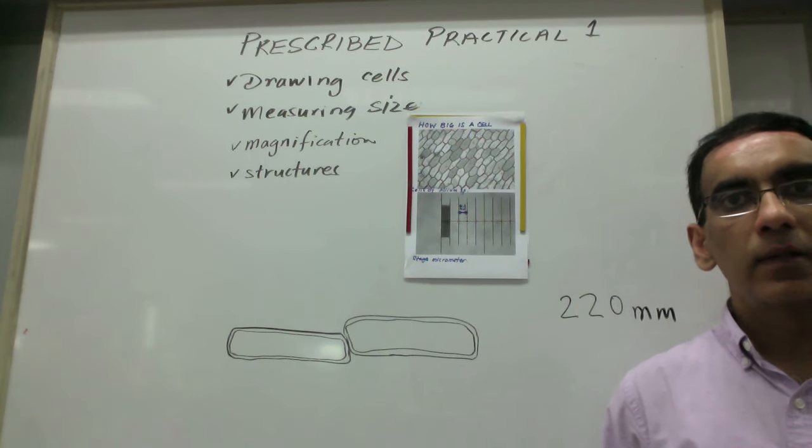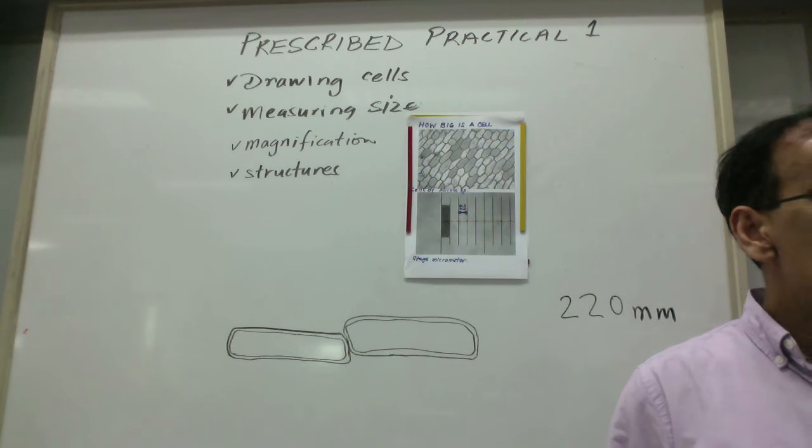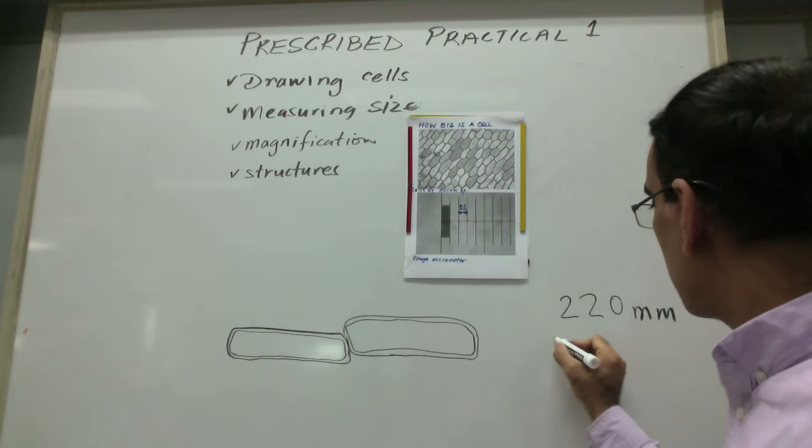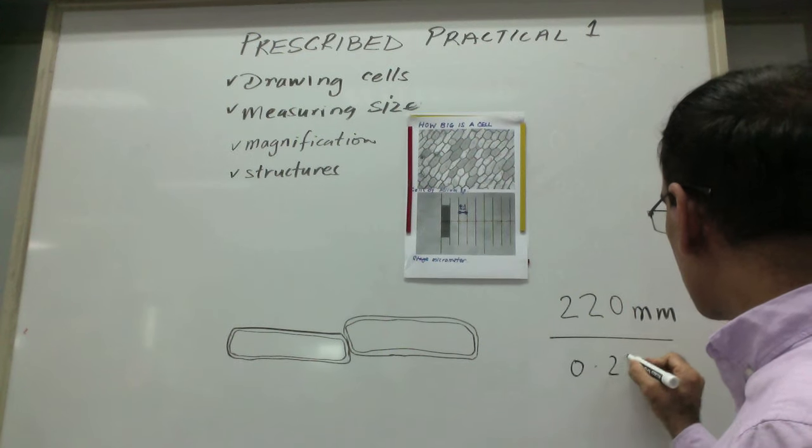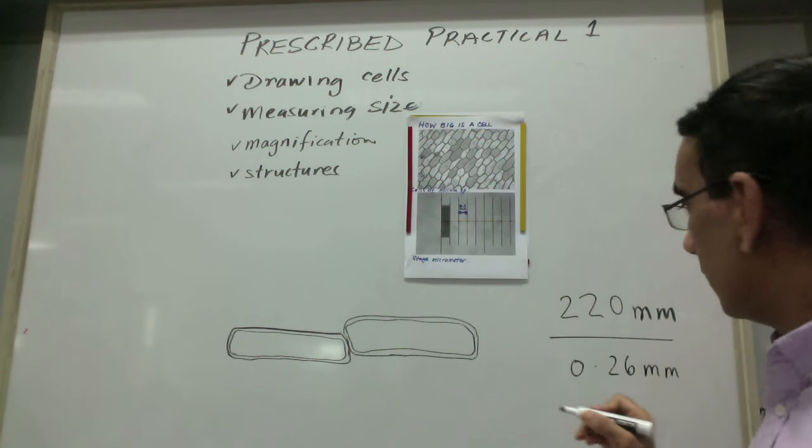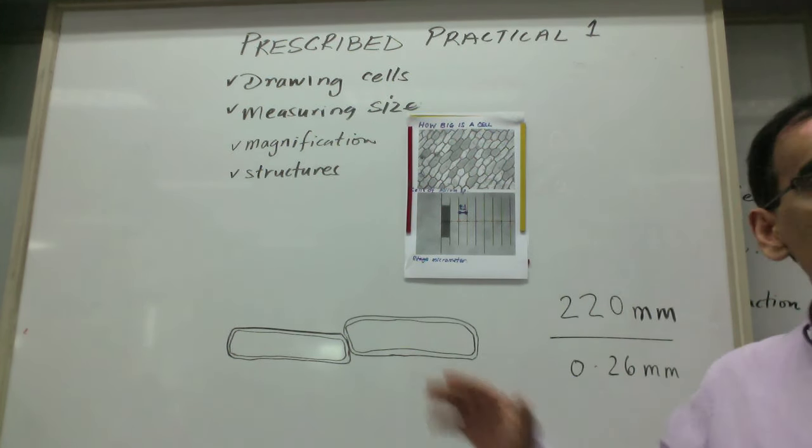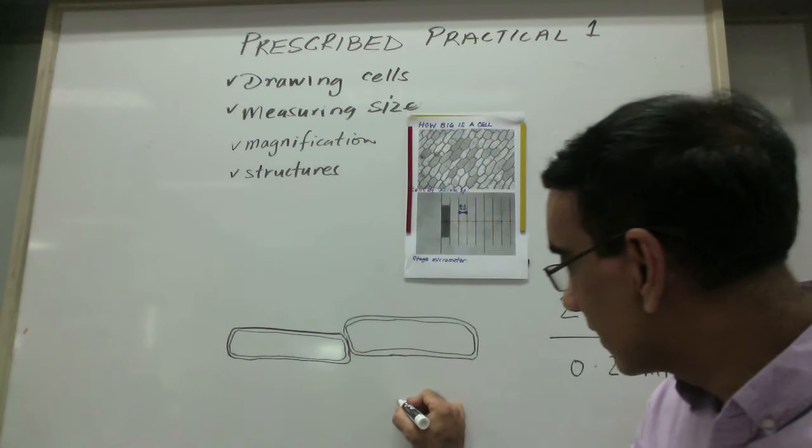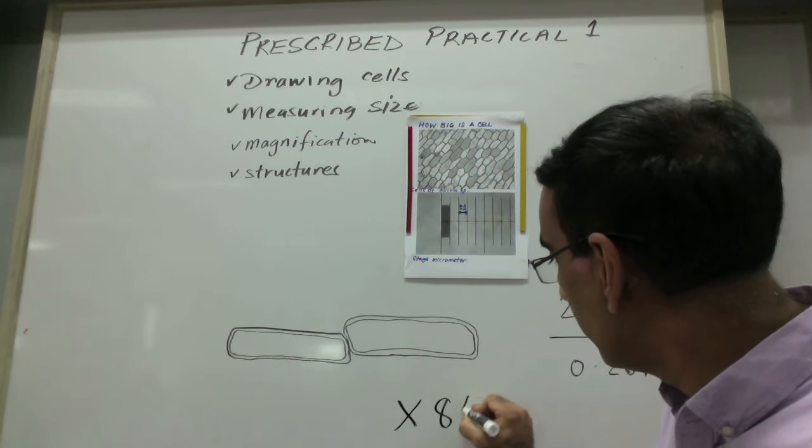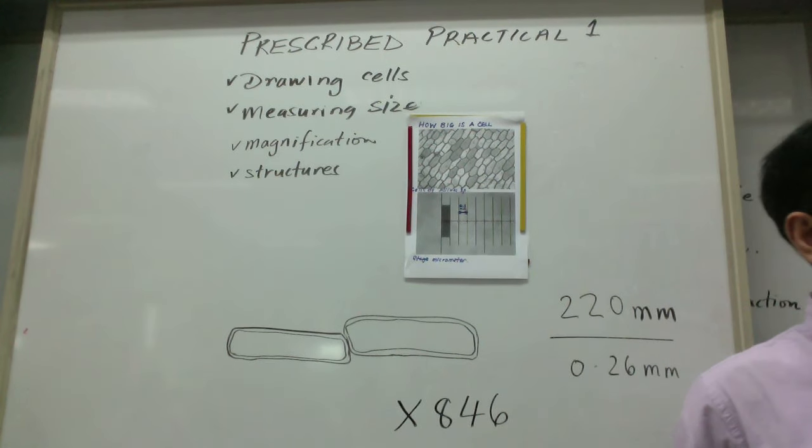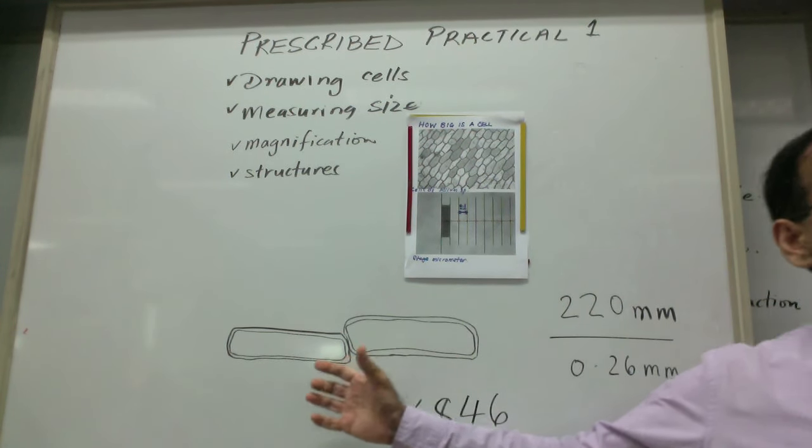Somebody would have to tell you the actual size of the specimen. If the actual size of the specimen is 0.26 of a millimeter, then you will say 220 millimeters divided by 0.26, which equals 846. So then we write below this here we write X846, that's the magnification.